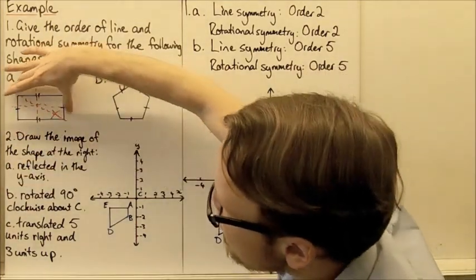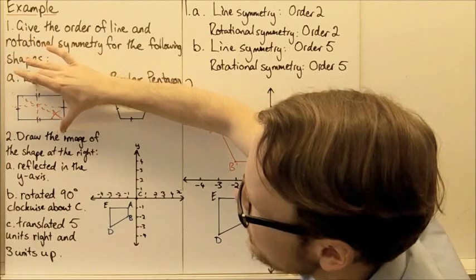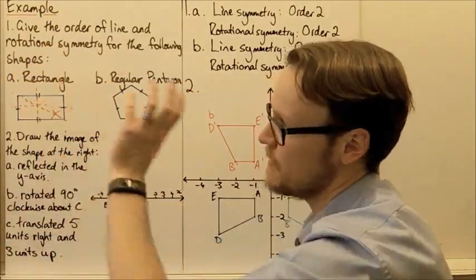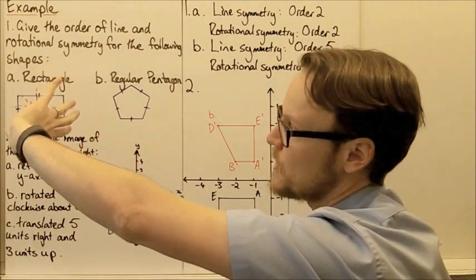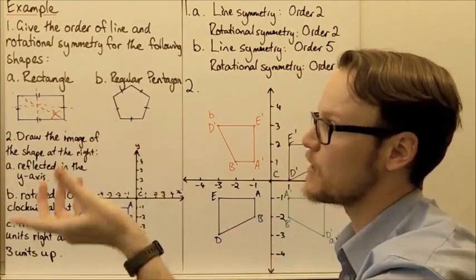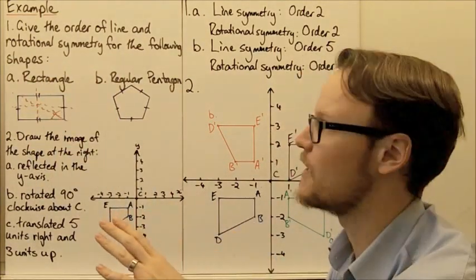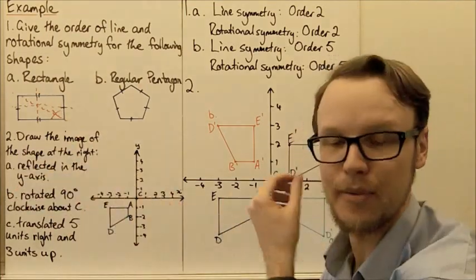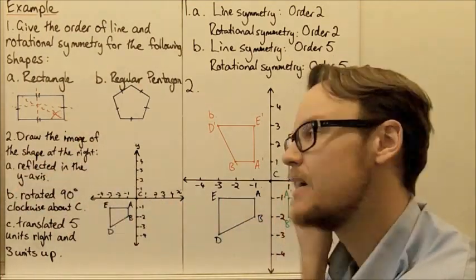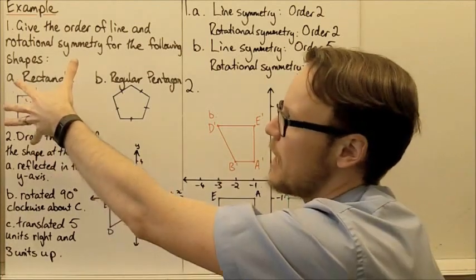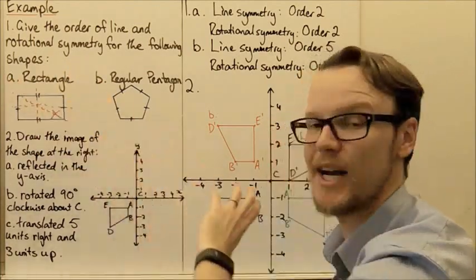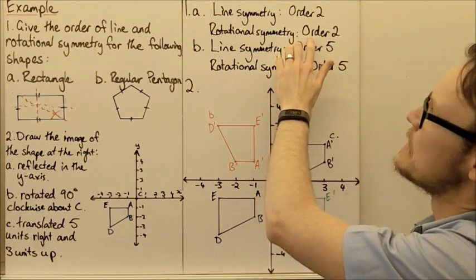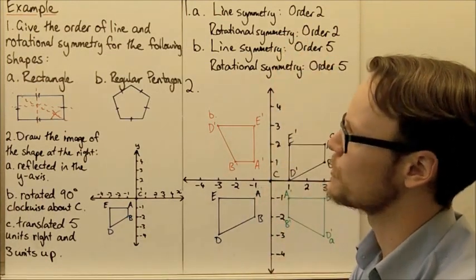As we rotate our rectangle, we'd reach a point where it's upside down but fitting perfectly over our original shape, and then continue rotating another 180 degrees to complete 360 degrees. So there are two possible fits as we rotate it. The order of rotational symmetry is also two.